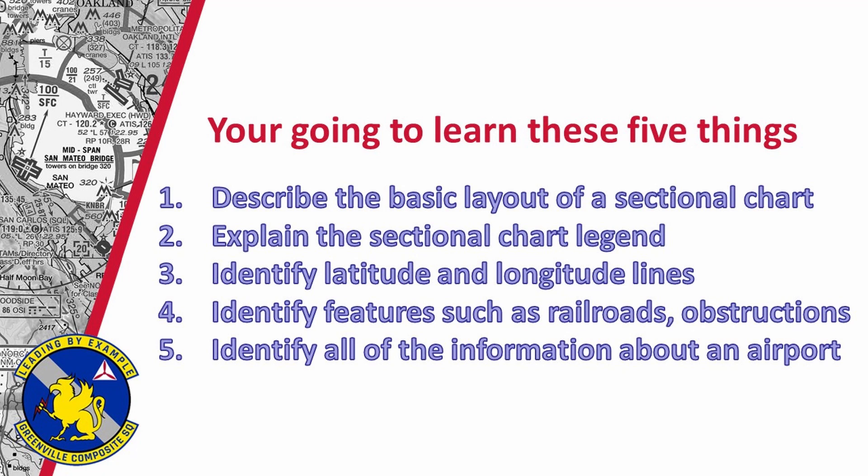By the end of this video, you're going to be able to do five things. Number one, you're going to be able to describe the basic layout of a sectional chart. Number two, you will be able to explain and use the sectional chart legend. Number three, you're going to be able to identify the latitude and longitudinal lines. Number four, you're going to identify features such as railroads and obstructions. And number five, you'll be able to identify all the information about an airport that is on the sectional.